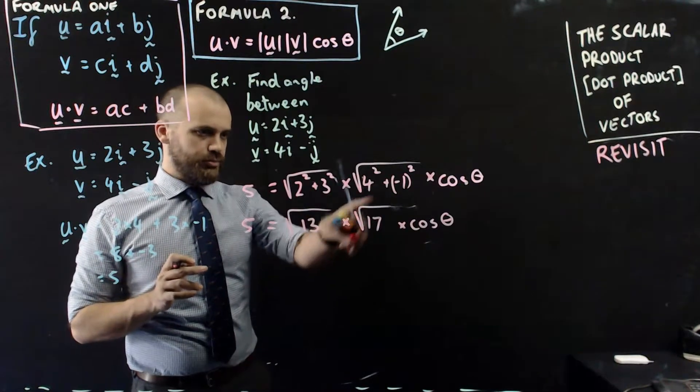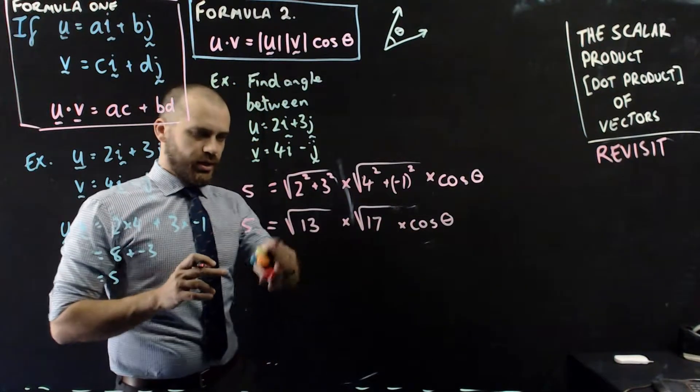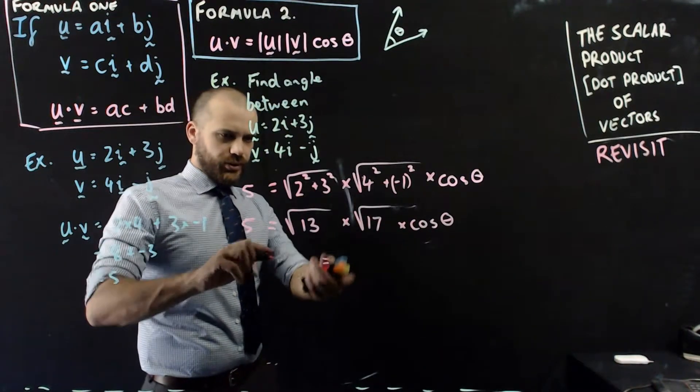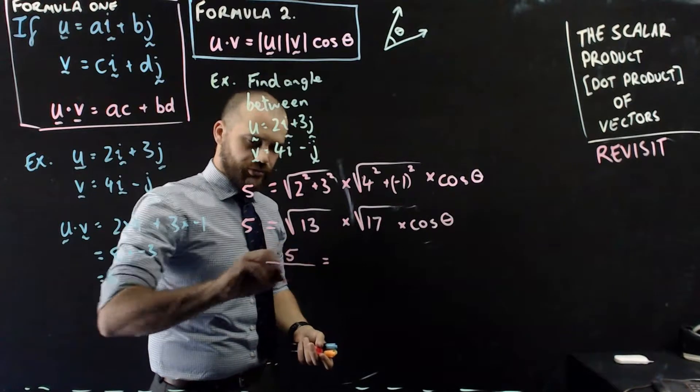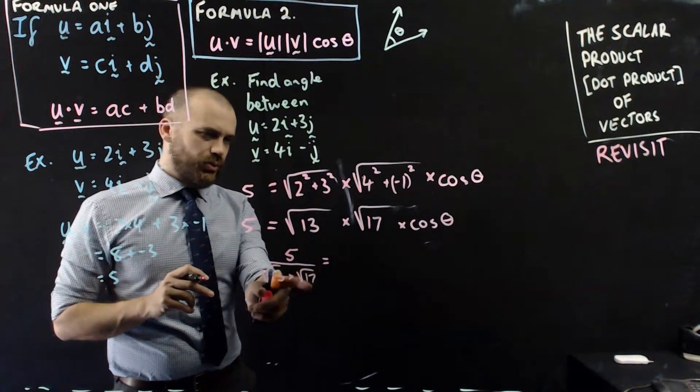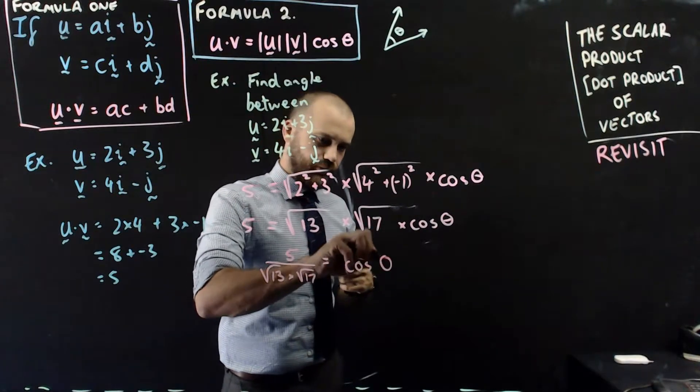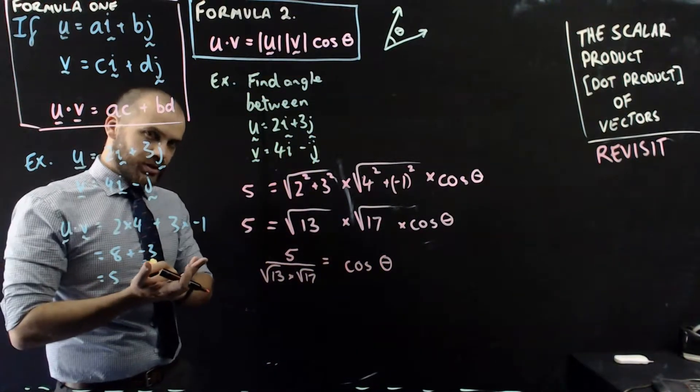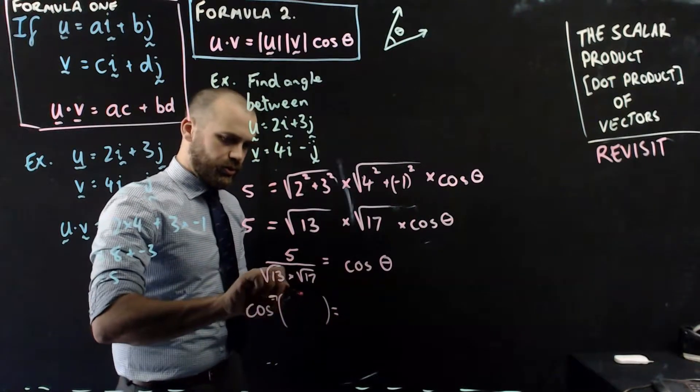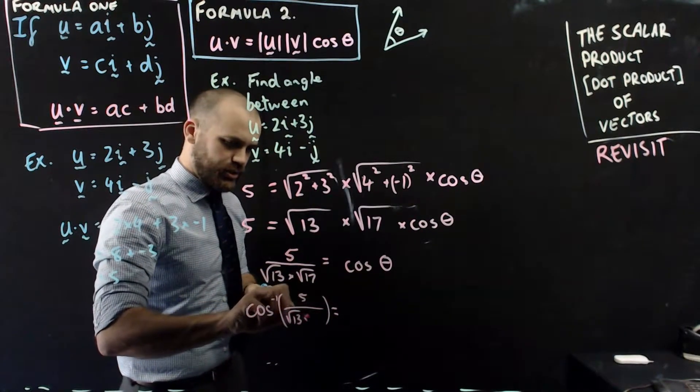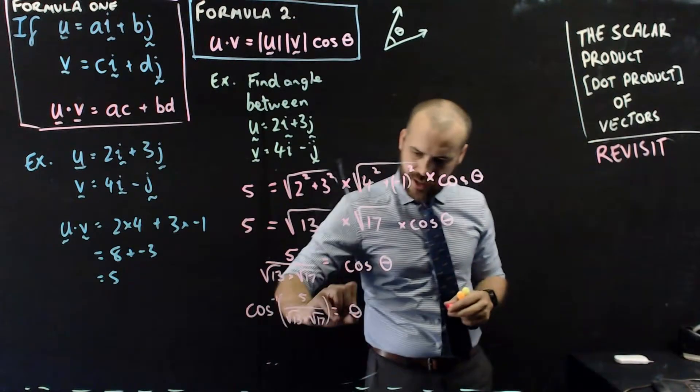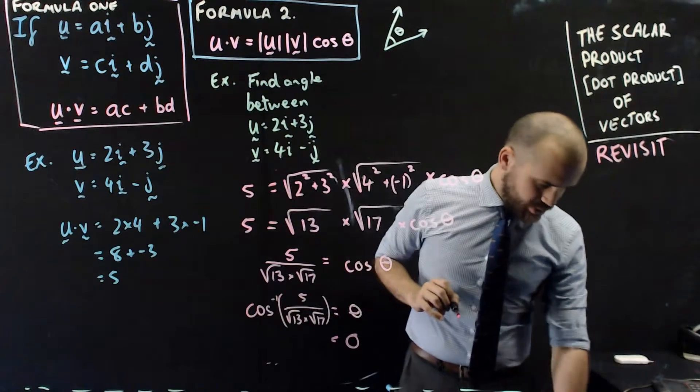I've done my maths. Root 13 times root 17 times cosine theta. Now, I can rearrange this. Just put my equal sign in the middle. That's bad practice, but we'll do what we've got to do. We do five divided by root 13 times root 17, that's like root 221, but whatever, equals cos theta. And now I can just do the inverse cos. Cos negative one bracket, all of that, five over root 13 times root 17 equals theta. Calculator, answer. With my calculator in degrees mode, it's spitting out 70.34.